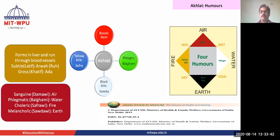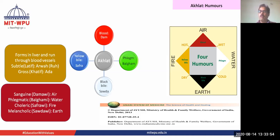In the sanguine temperament, the air element is dominant. In the phlegmatic temperament, the water element is dominant. This diagram is taken from the Unani system of medicines by AYUSH.